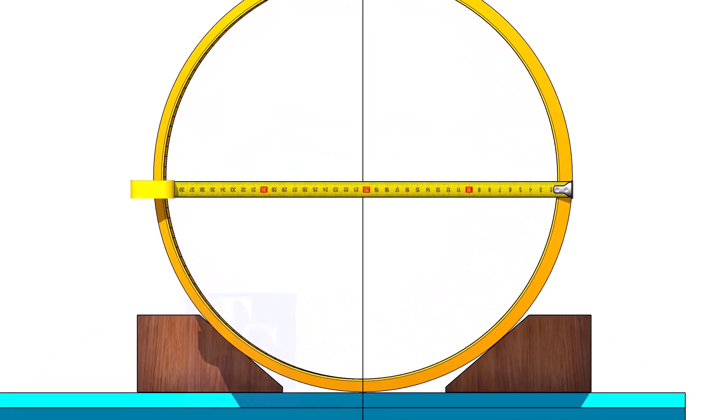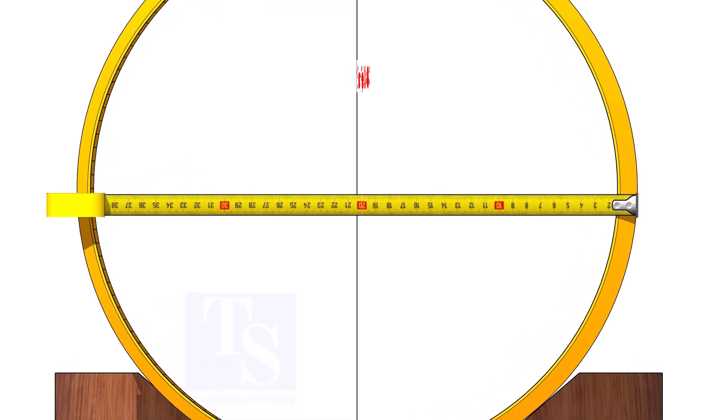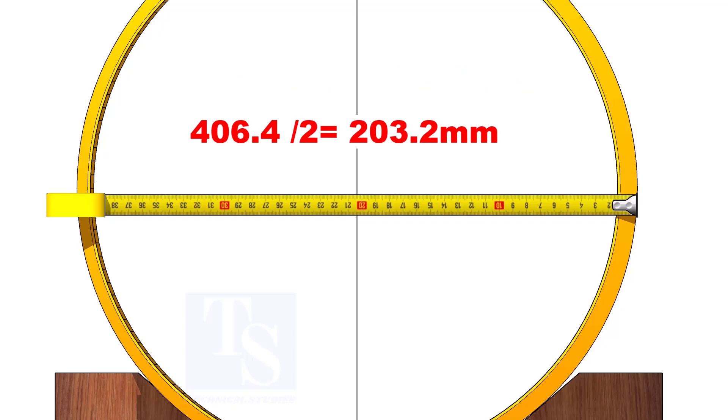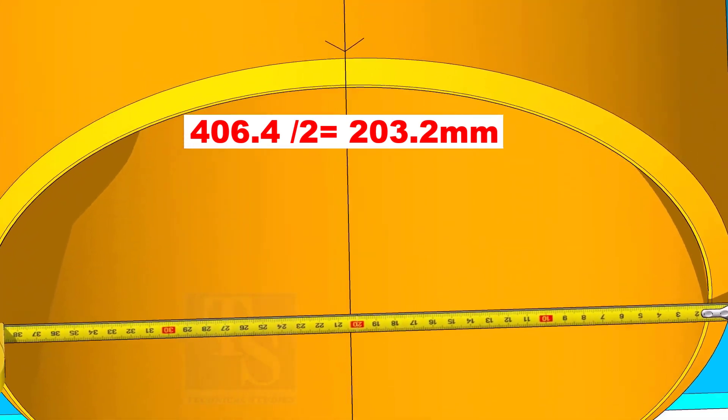This is a 16-inch pipe. OD of a 16-inch pipe is 406.4 millimeters. Mark the point where the half OD 203.2 millimeters reaches.